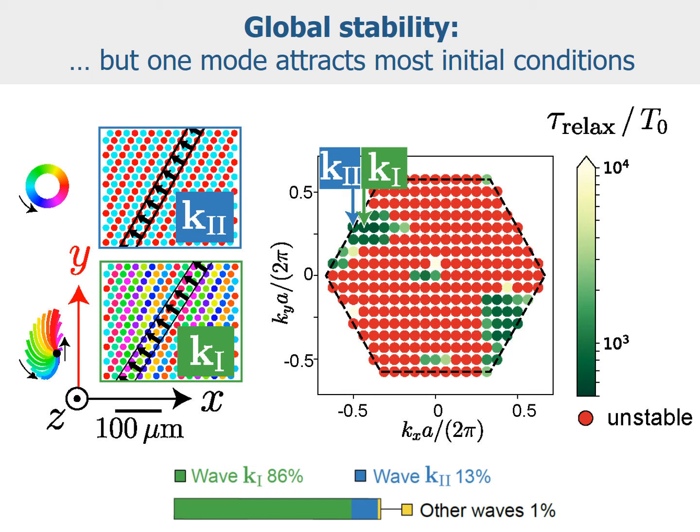This metachronal wave corresponds to a so-called dexioplectic metachronal wave, where the traveling direction of the metachronal wave is rotated counterclockwise relative to the direction set by the effective stroke of the cilia beat. Indeed, in the original experiment of Machemer, this was exactly what was observed — a dexioplectic wave — as comes out here from our theoretical analysis.